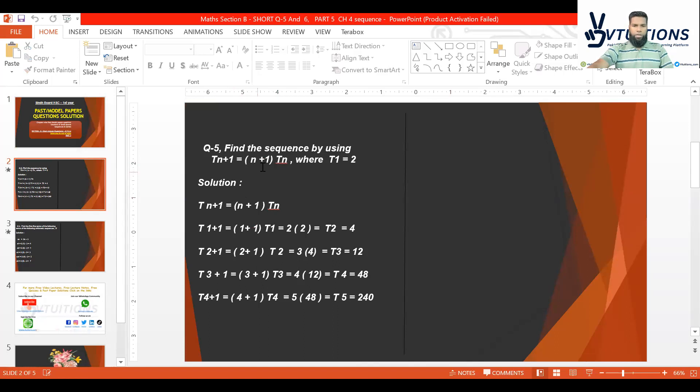You can see here it's written: find the sequence by using Tn+1 = (n+1)Tn where T1 = 2. Students, you can see what we have to find out. We have to find Tn, and you're given the value of Tn+1. Find the sequence by using T1, whose value is 2, right? This is given.